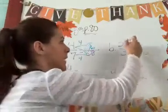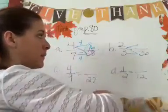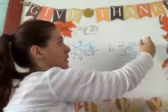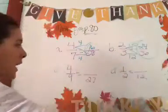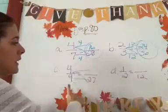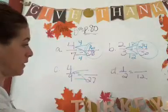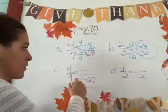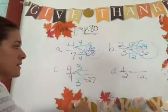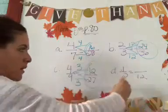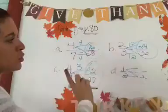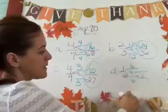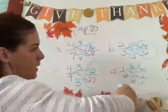Backwards Z. Nine times what equals 27? Ethan? Three. So four times three equals what, Andres? Twelve. Excellent. Backwards Z. Two times what equals twelve? Danielito? Six. So one times six equals what, Dueno? Six. Ba-da-ding, ba-da-boom.